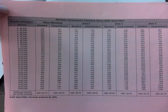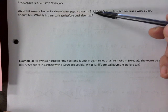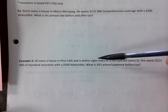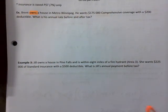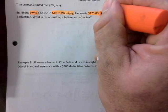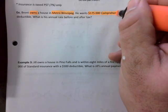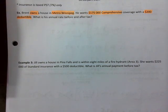Let's do two examples. The first one will have no overage; the second will have overage — that's the only difference. Brand owns a house — highlight that because it's homeowner's insurance. We are in Metro Winnipeg. He wants $175,000 worth of coverage, comprehensive, with a $200 deductible. What's the annual rate before and after tax?